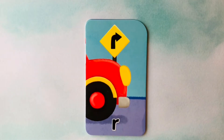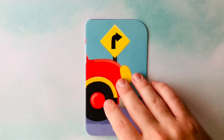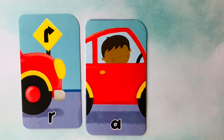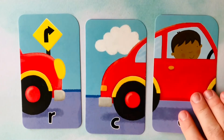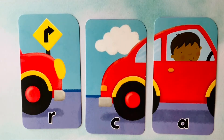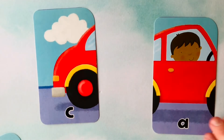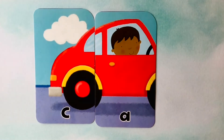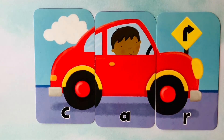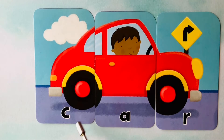Let's learn how to spell. Looks like we're starting off with an R. We also have an A. And our third letter is a C. What do you think we're spelling with these letters? I think we're spelling car. Car starts with a C, it follows with an A, and it finishes with an R. Car. C-A-R is car. C-A-R spells car.